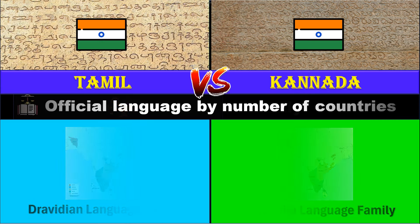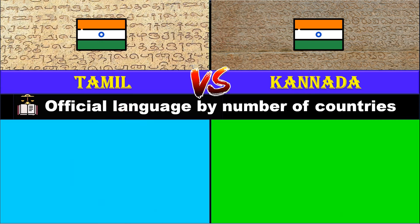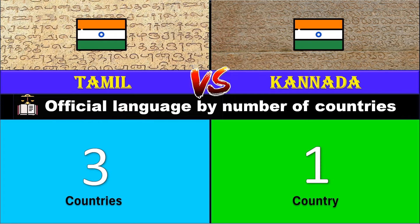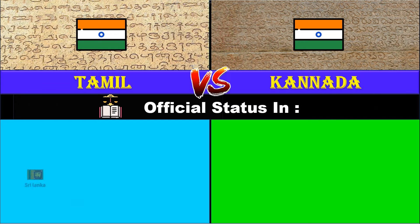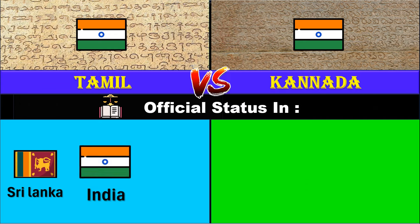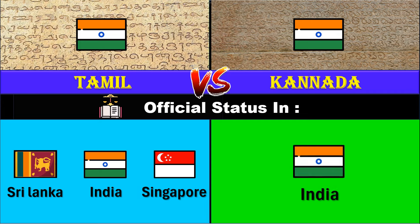Official language by number of countries: Tamil is official in three countries, while Kannada is official in one country. Tamil is official in Sri Lanka, India, and Singapore. Kannada is official in India.